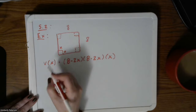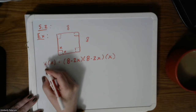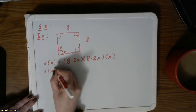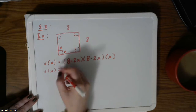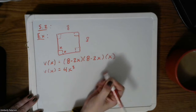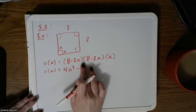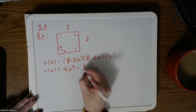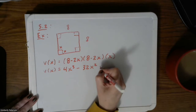We did a bunch of work and found several things. I did not do this on Wednesday, but I think it's worthwhile to write down its expanded form. If you were to distribute everything across, you would end up with 4x cubed minus 32x squared plus 64x.